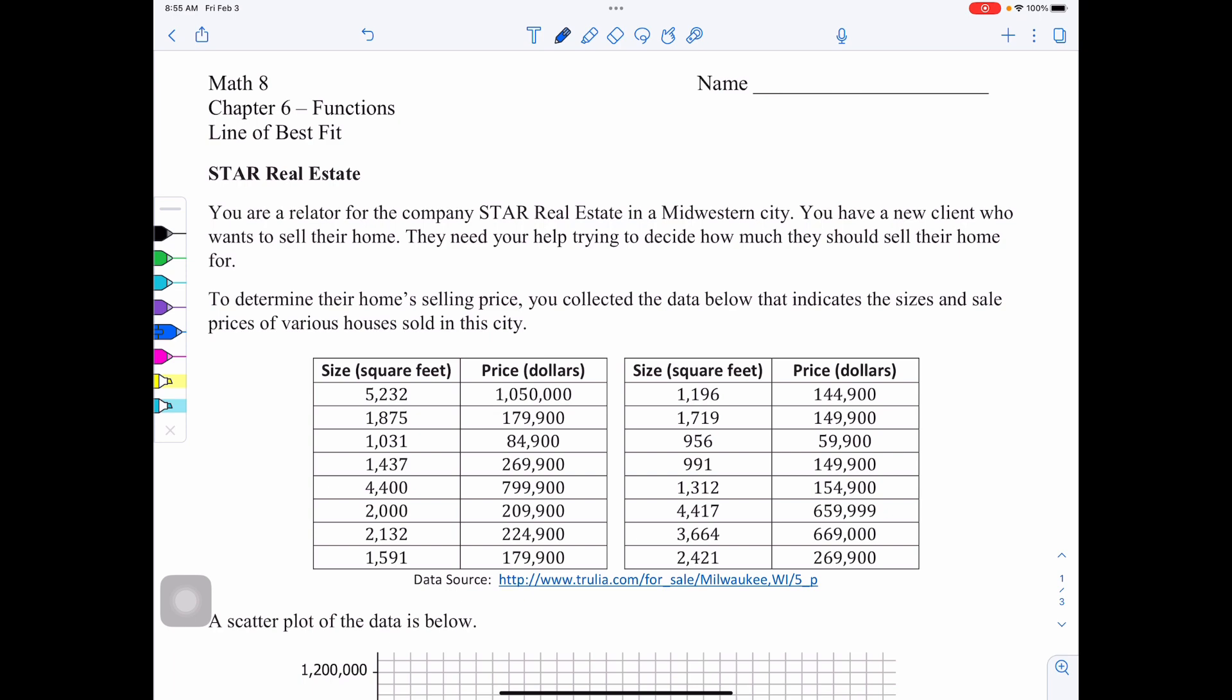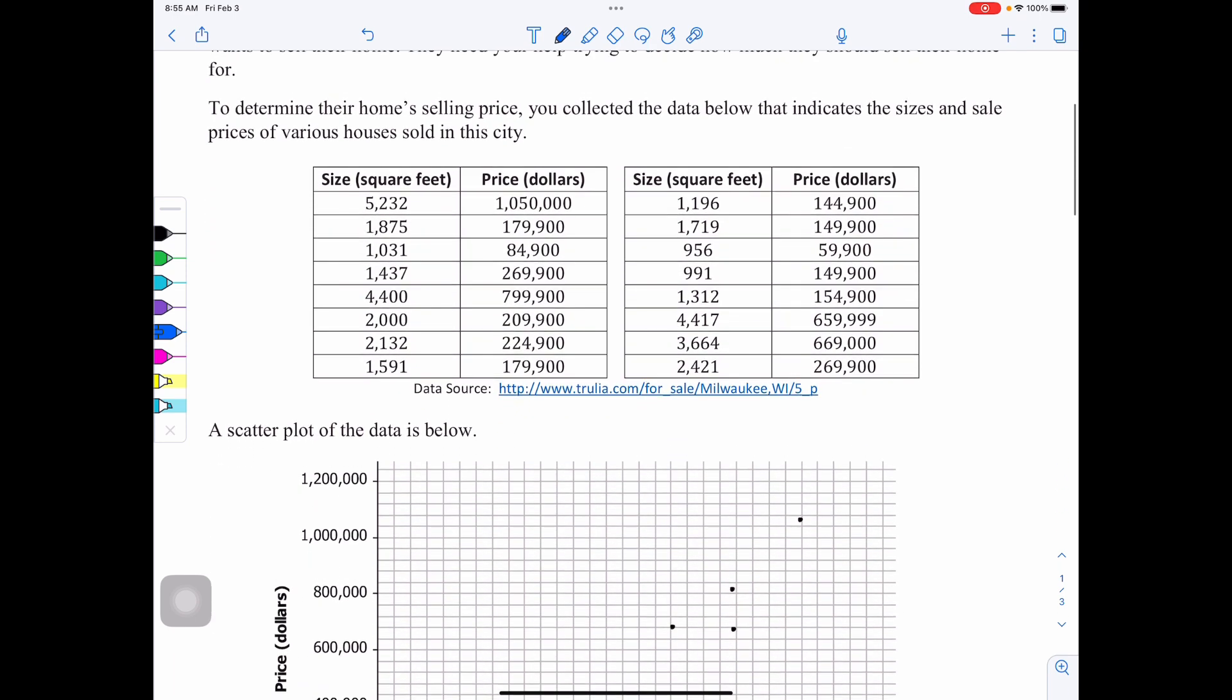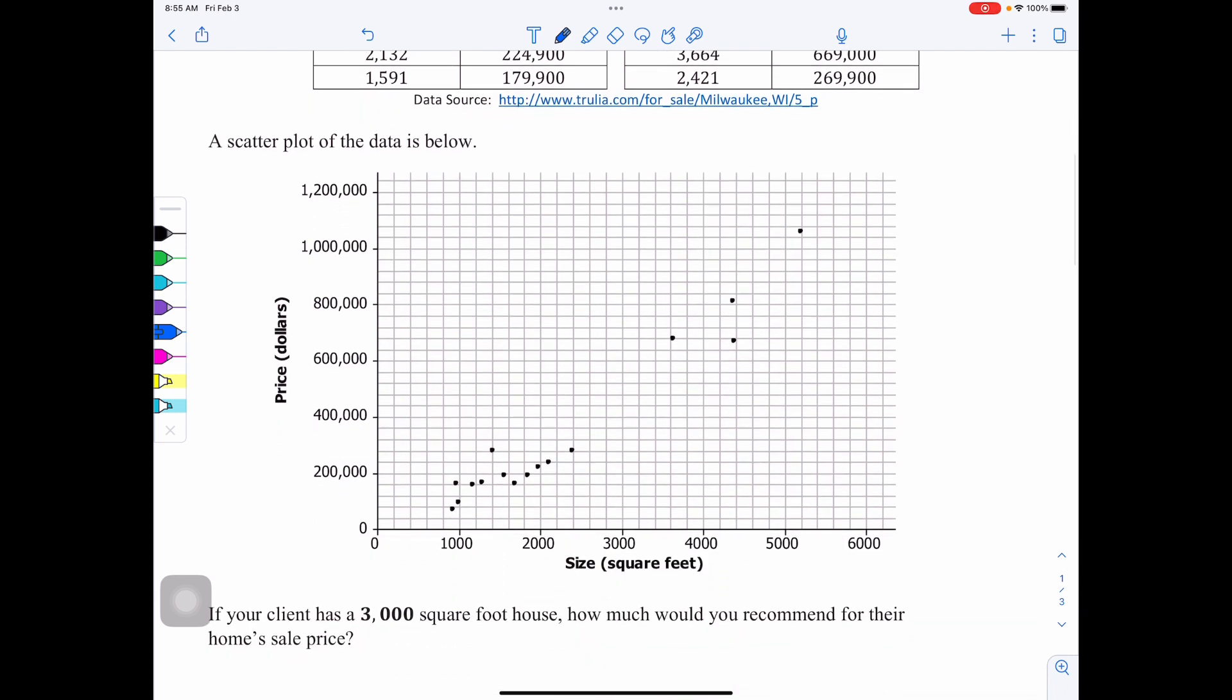If you take a look at the table, the table's just been split up into two sections instead of making it really long. On the left, the X, you have size in square feet, and the Y on the right, you have price in dollars. A scatter plot of this data is below. All of those data points have been used to create a scatter plot, and here it is.